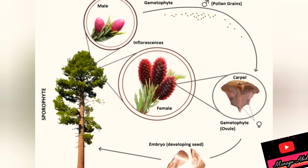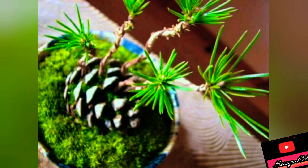You can see here the whole process. Male cones make pollen grains that are winged, fly, and get into the female cone where they unite with the carpel ovules and become an embryo. This embryo develops into a seed, and if the seed gets favourable conditions, it starts growing into a new baby plant that after some years becomes a tree.